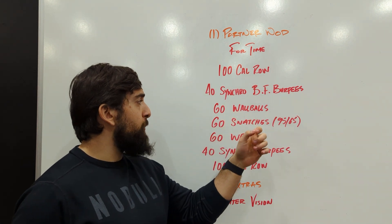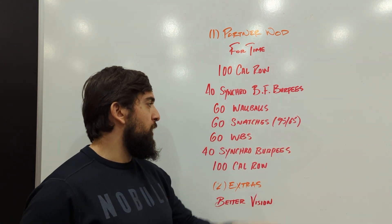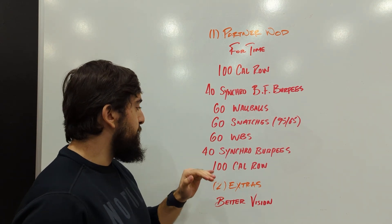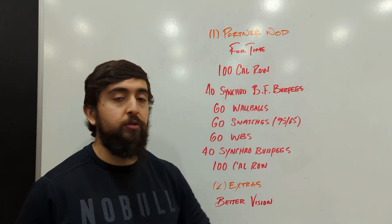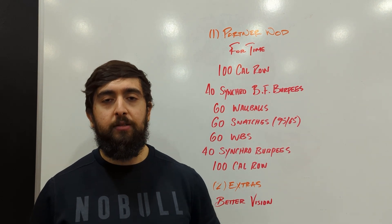Then 60 wall balls, 60 snatches, and then 60 wall balls again, all accumulated. Then back down again with the burpees and then the row to finish off that workout.